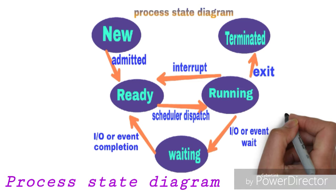In the running state, a process can be sent to the waiting state when it demands input/output. Once the input/output demand is completed, it is sent back to the ready state. The switching between ready, running, and waiting states continues until the process execution is over and its state changes to terminated. This is the concept of process state.